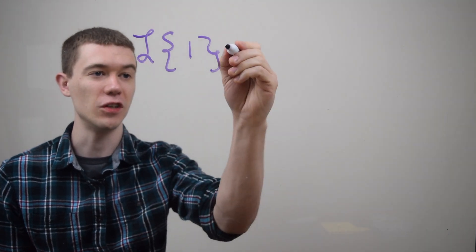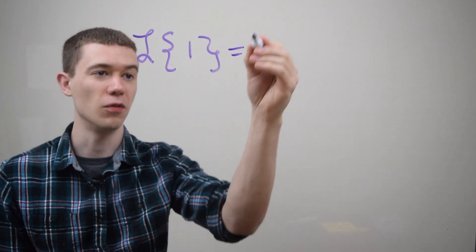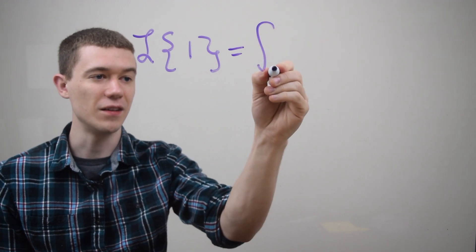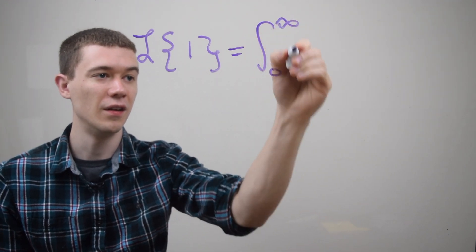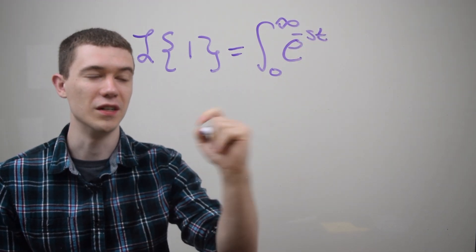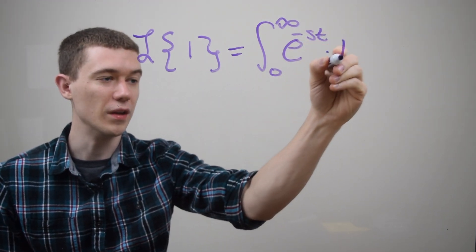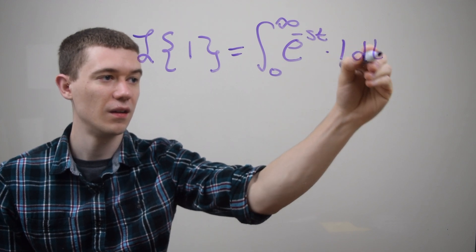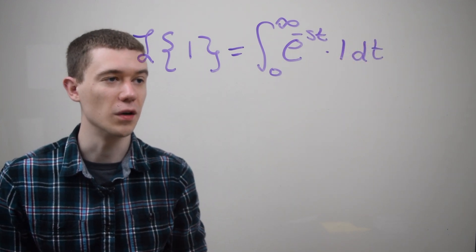So remember that the definition of the Laplace transform of something is the definite integral from 0 to infinity of e to the minus st times whatever the function is, in this case 1, that you want to take the Laplace transform of dt.